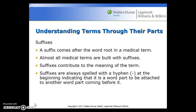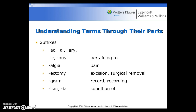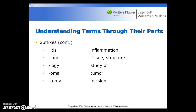A suffix comes after the word root in a medical term. Almost all medical terms are built with suffixes, and they contribute to the meaning of the term. They're always spelled with a hyphen at the beginning, indicating they're attached to a word part before them. Examples include: -ac, -al, -ary, -ic, or -ous for pertaining to; -algia for pain; -ectomy for surgical removal; -gram for a record or recording; -ism or -ia for a condition of; -itis for inflammation; -ium for tissue or structure; -logy for study of; -oma for tumor; and -tomy for incision.